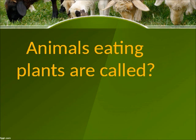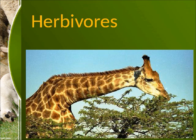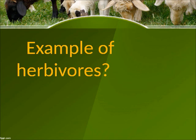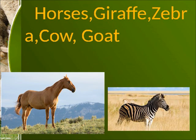Animals eating plants are called herbivores. Examples of herbivores: horses, giraffe, zebra, cow, goat.